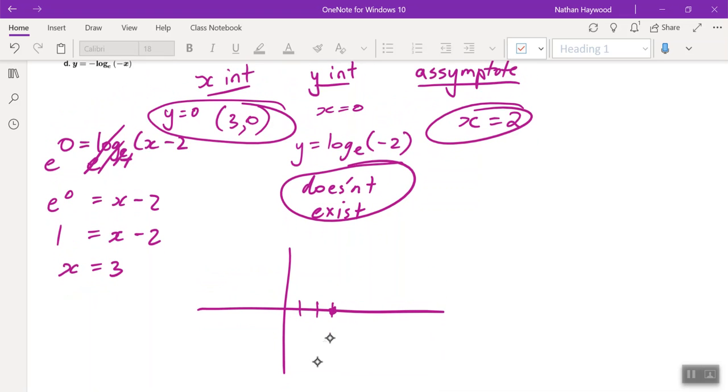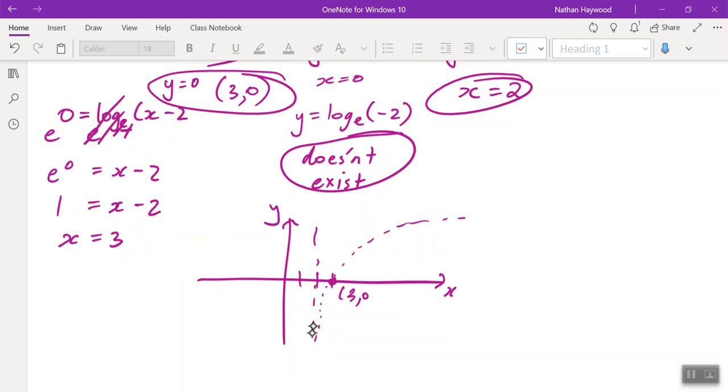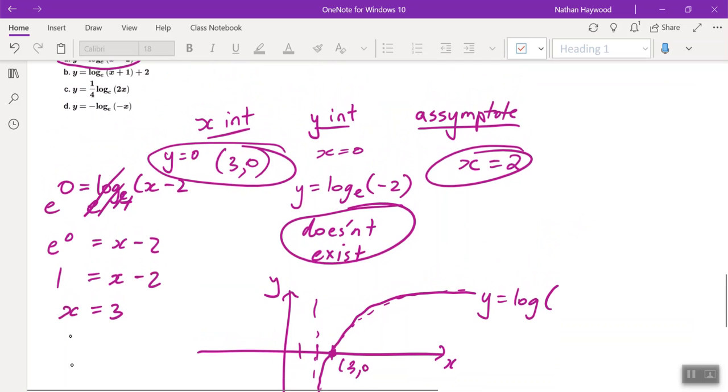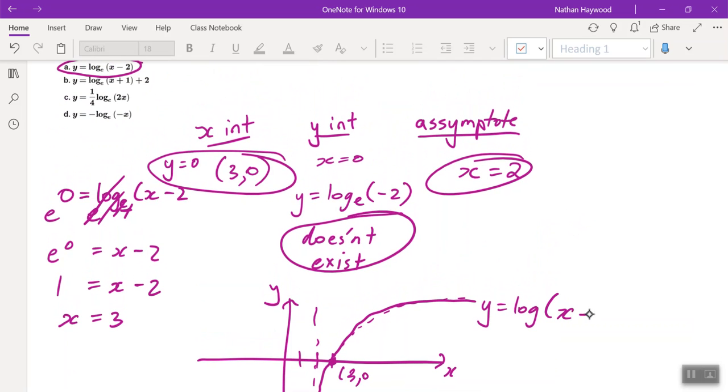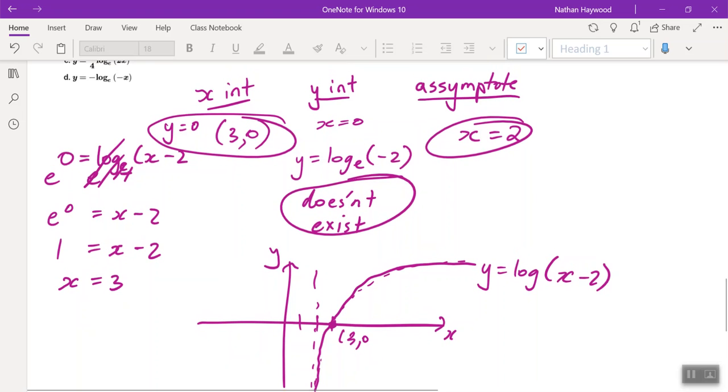So it's limiting at x equals 2. So it looks something like that. And see how I've labeled the graph as well. So you can draw x equals 4. See how I'm labeling the asymptote? Please make sure you do that. So that's natural log, which you may have been asking about.